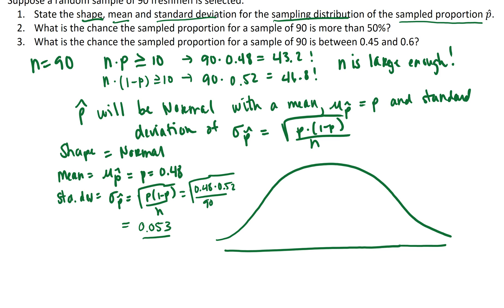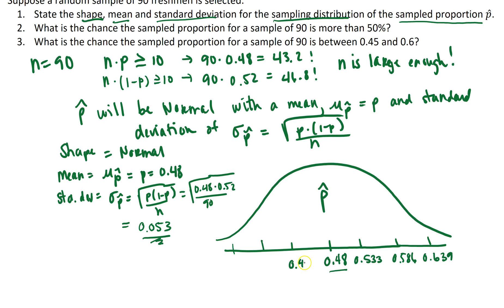Now that we know the distribution of our statistic comes from a normal distribution, we can apply what we already know about normal distributions to find probabilities related to our sampled proportion. So p-hat comes from a normal distribution centered at 0.48 with standard deviation 0.053. Drawing in standard deviations above and below the mean: one SD up is 0.533, two SDs up is 0.586, three SDs up is 0.639; one SD down is 0.427, two SDs down is 0.374, three SDs down is 0.321.